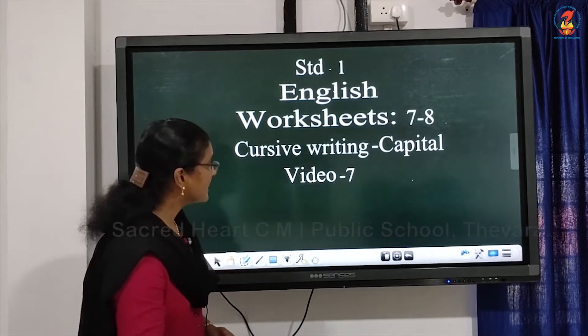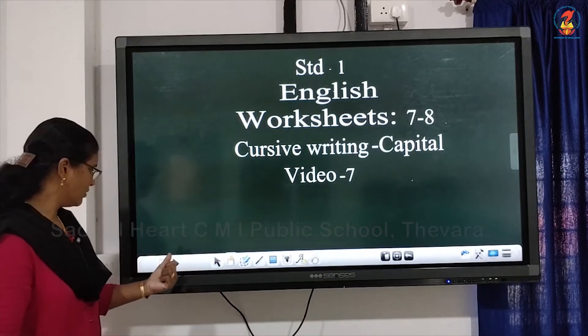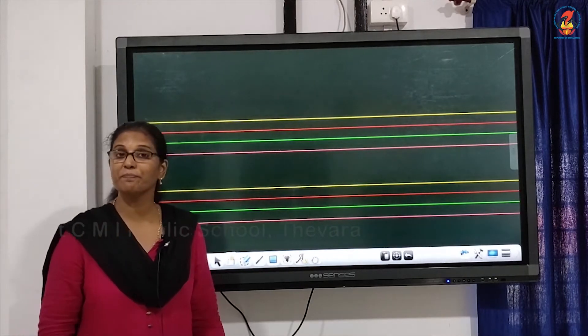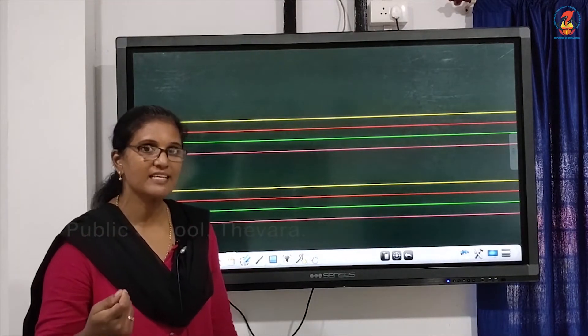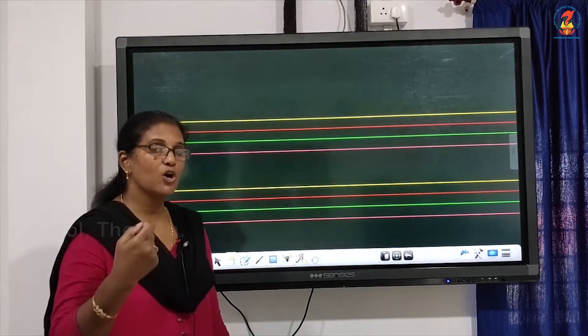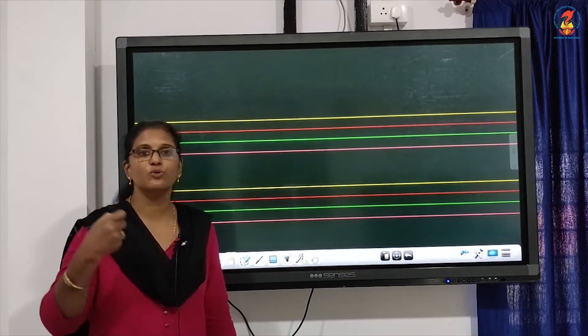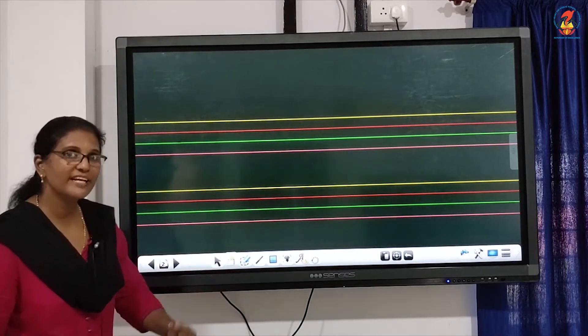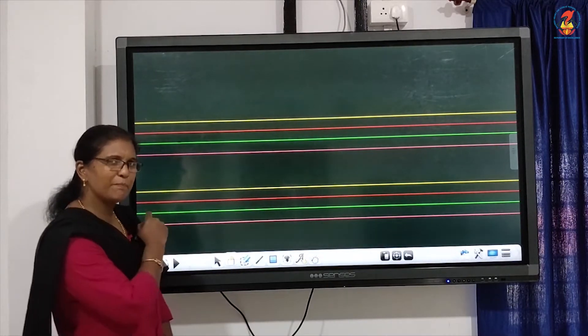Ok sweet ones, let's see how we are going to write today. From which letter can you guess? After N, yeah right O. O to U we are going to do it today. So how shall we do it? It's very very simple.